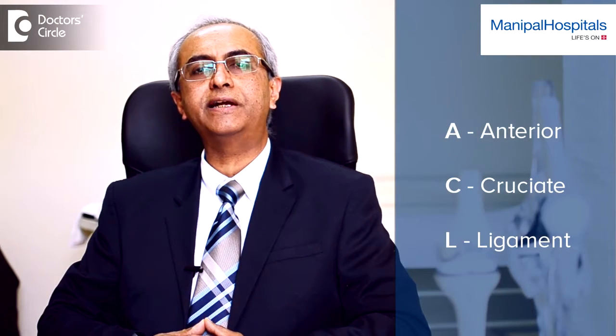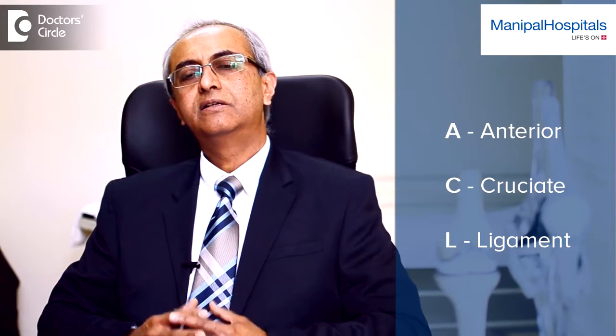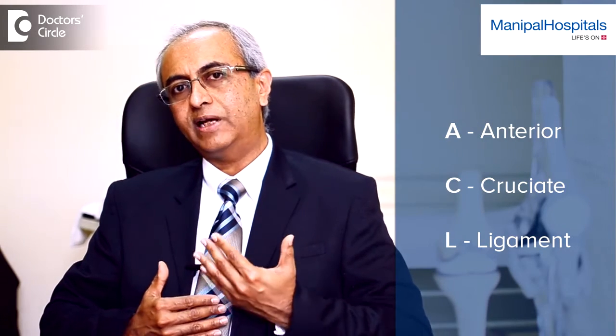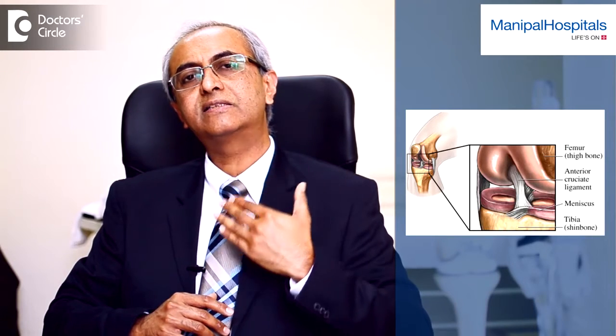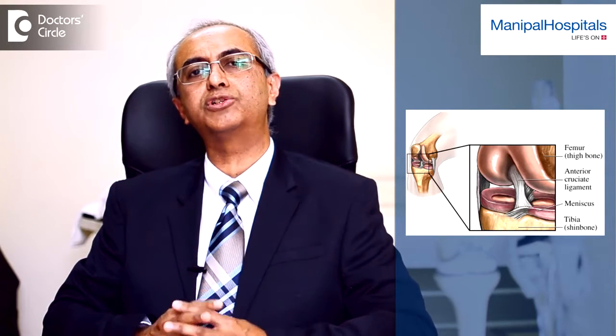The ACL is short for anterior cruciate ligament. Just to give you a little background, there are two cross ligaments in the knee which are inside the knee. The ACL is the anterior cruciate ligament which is the front of the cross, and the PCL is the posterior cruciate ligament which is at the back of the cross.